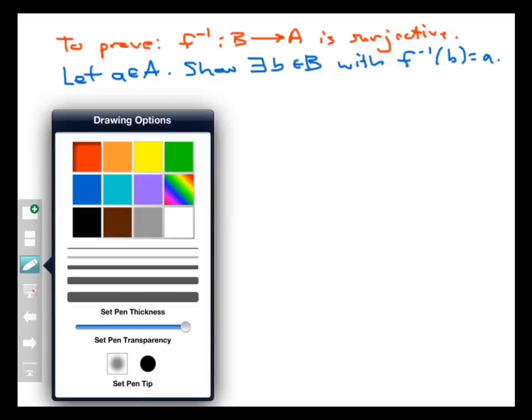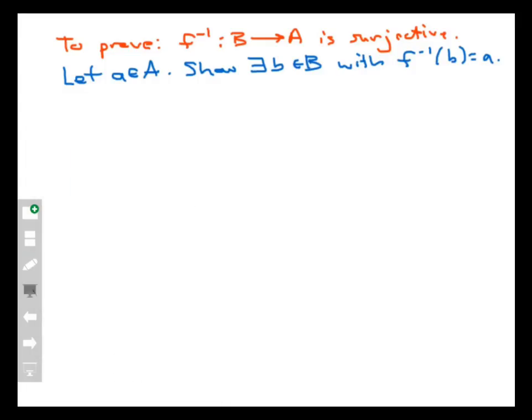We already know that f inverse is a function. What we need to prove is that f inverse mapping B into A is surjective. To do this, we're going to do it the way we always prove surjections, which is we choose a point in the codomain, that's A this time, and construct a point in the domain, which is B this time. Let's call that point little b, such that f inverse of b equals a. How do we know such a point exists? I've chosen a in A, the codomain of f inverse, but it's also the domain of f.